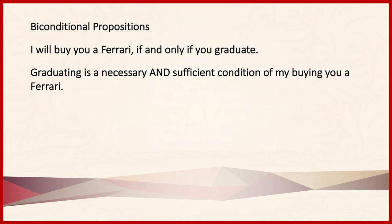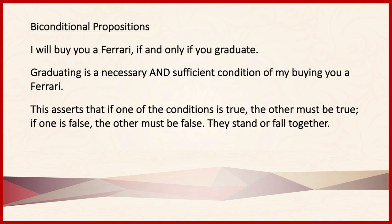Because biconditional propositions state that kind of relationship between the sub-propositions on either side of 'if and only if,' we can say that if one of the conditions is true, the other must be true; if one is false, the other must be false — they stand or fall together. That is how we generate the valid and invalid biconditional syllogisms. The logic of hypothetical and biconditional syllogisms gets really interesting when we see how to express these relationships without actually using the terms 'if-then' or 'if-and-only-if' — that's what we'll cover in the next section.